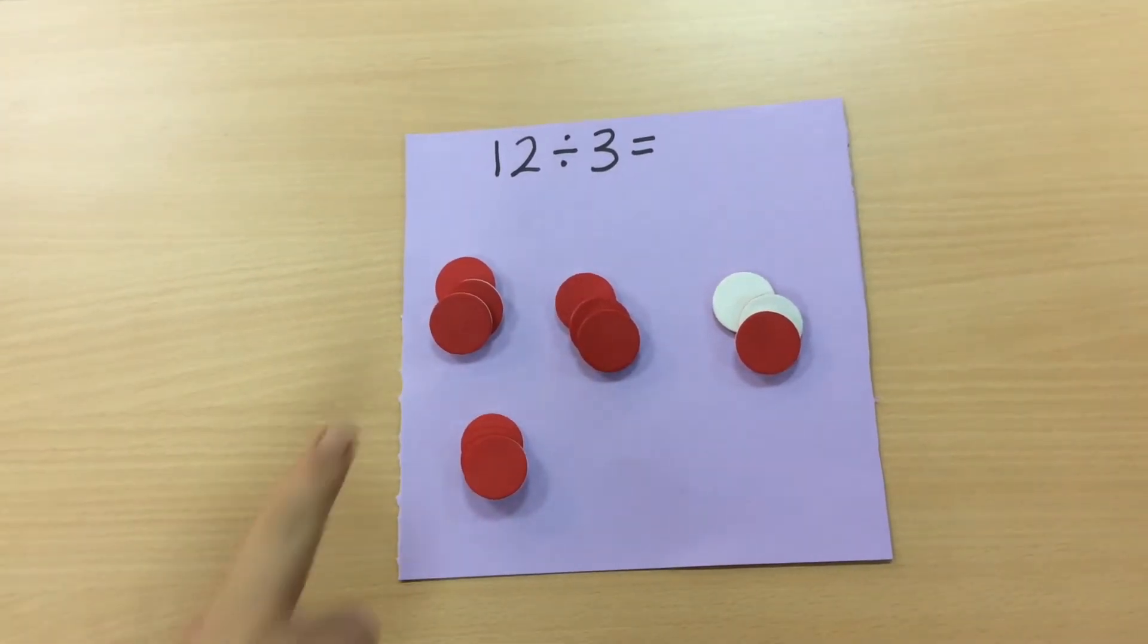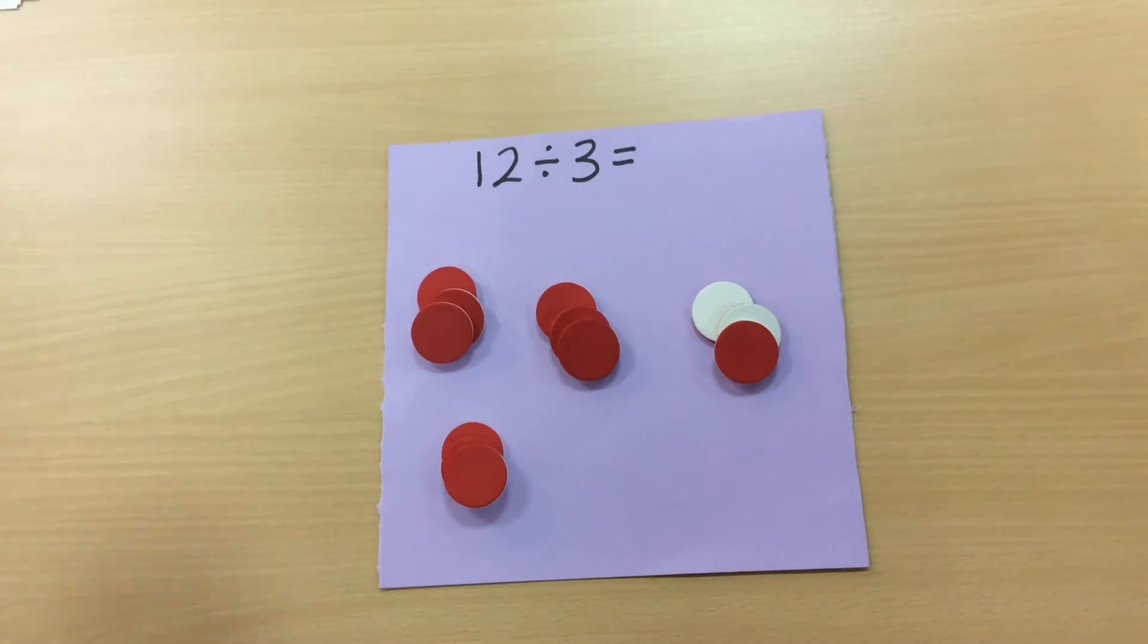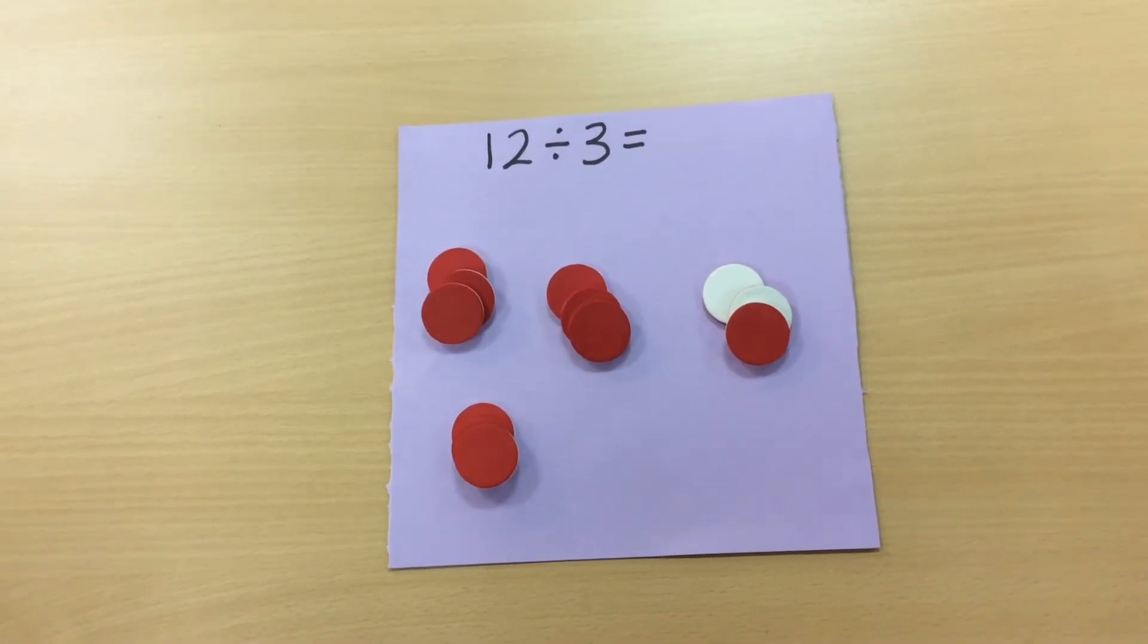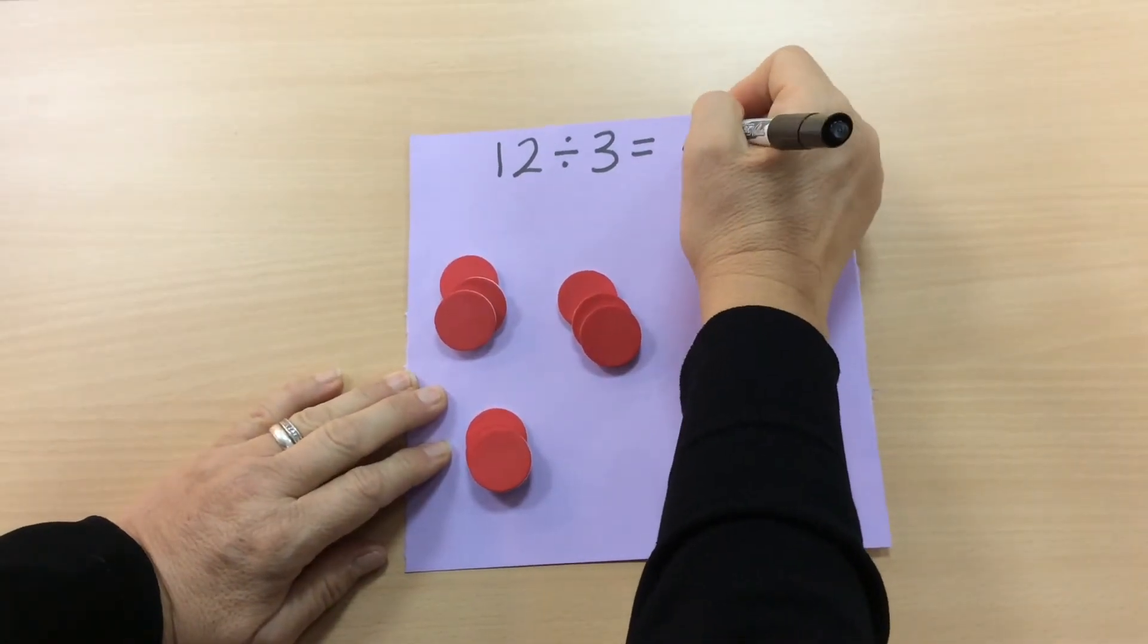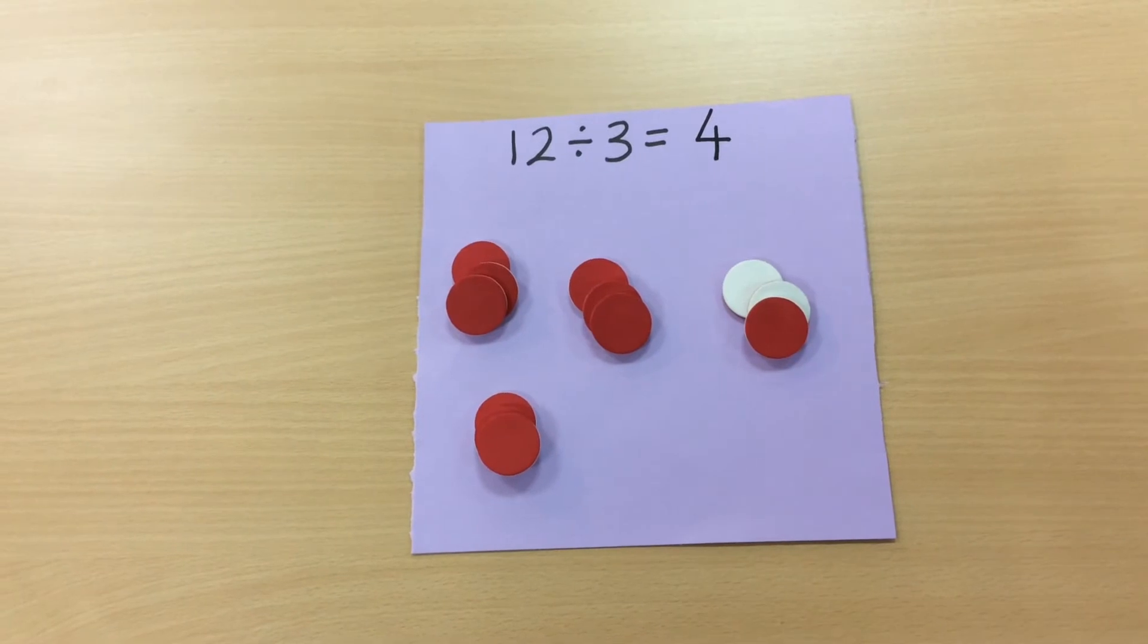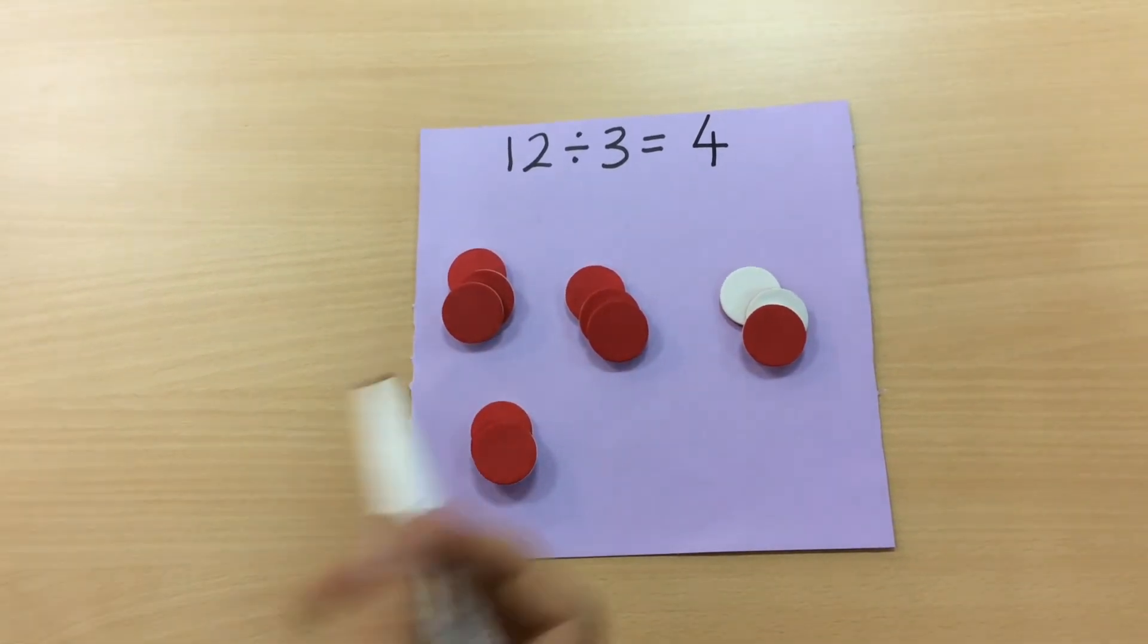So we can see that there are four groups of three. So 12 divided or shared between 3 equals 4. And this is where it can relate back to the multiplication tables because the children can see that there's